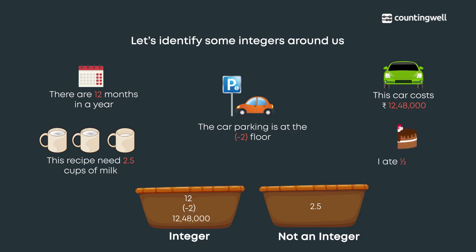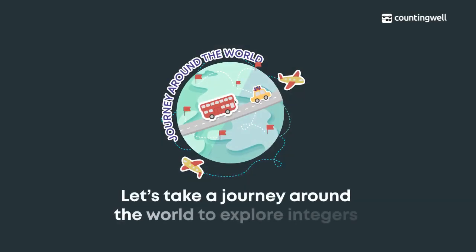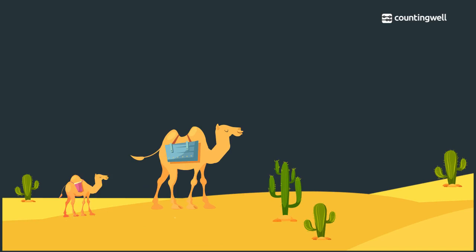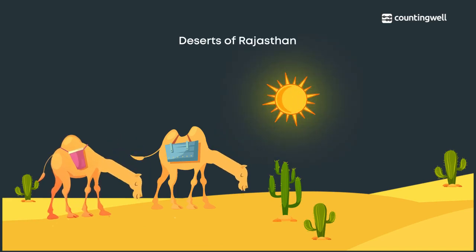I ate half of the cake — half is not an integer. Let's take a journey around the world to explore integers. Our first stop is at the deserts of Rajasthan. Can you spot the camels? Oh, it's very hot!